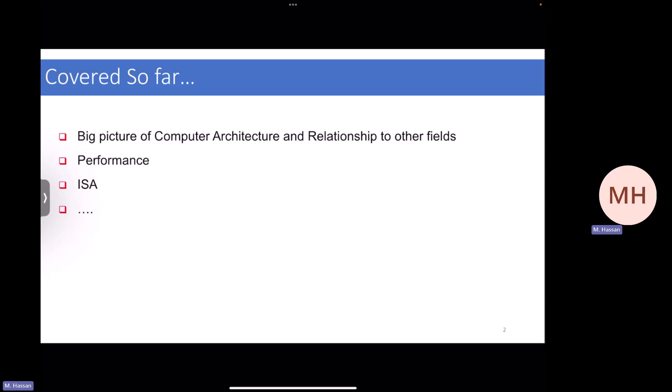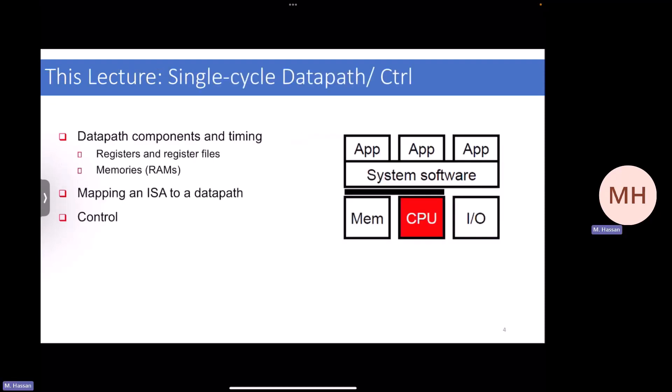The ISA is the contract we consume from software in order to execute it. This fits very well in today's lecture because we're going to take that ISA, consume it, and implement it in hardware. We're going to focus on the CPU as part of the full computing system, so clear your mind from the lab one discussion.